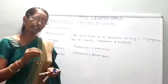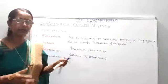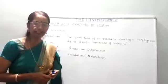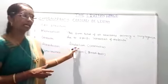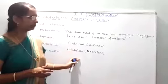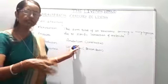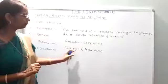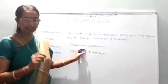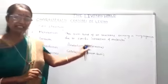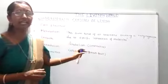Metabolism is of two types. There are two major kinds of metabolism reactions: the very first one is anabolism, and the second is catabolism. Anabolism is a kind of reaction and catabolism is also a kind of reaction. The constructive reactions are known as anabolism.